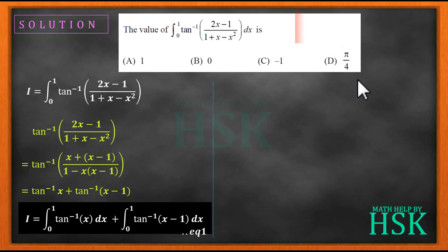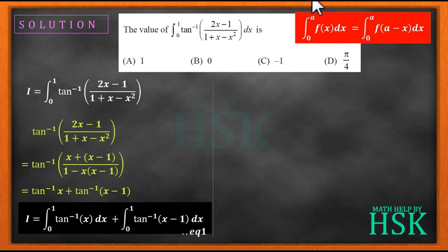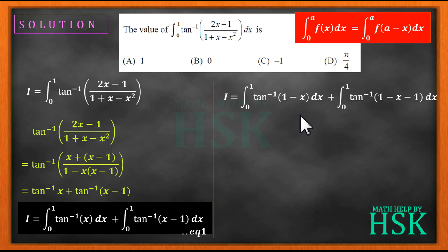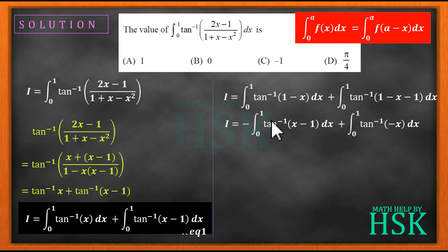To solve further, I am going to apply the property: ∫₀ᵃf(x)dx = ∫₀ᵃf(a-x)dx. On applying this property, I can rewrite equation 1 as ∫tan⁻¹(1-x)dx from 0 to 1, plus — substituting x with (1-x) — ∫tan⁻¹(1-x-1)dx from 0 to 1, which gives ∫tan⁻¹(-x)dx from 0 to 1.